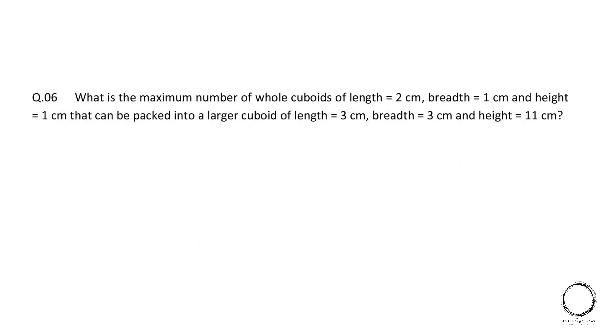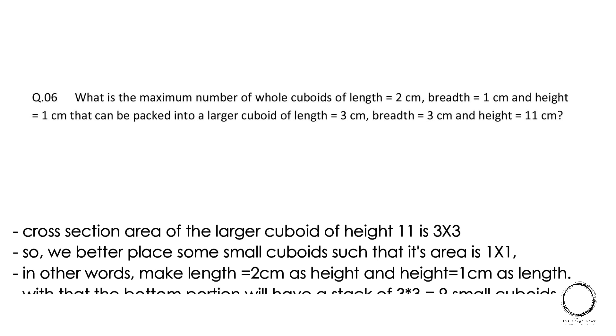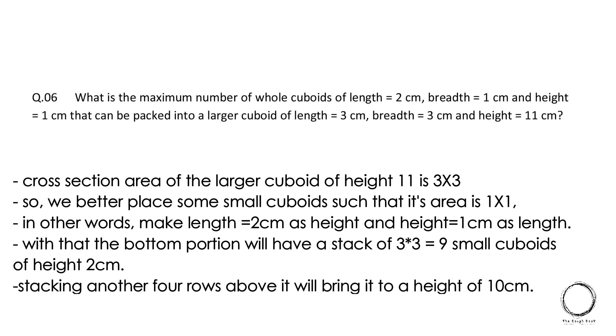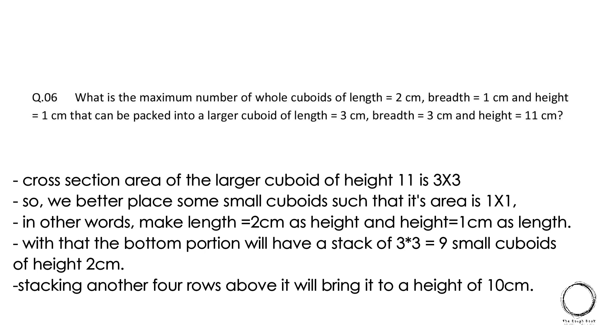Moving on. What is the maximum number of whole cuboids of length 2 cm, breadth 1 cm, and height 1 cm that can be packed into a large cuboid of length 3 cm, breadth 3 cm, and height 11 cm? Cross-section area of the large cuboid of height 11 is 3 x 3. So we better place some small cuboids such that its area is 1 x 1. In other words, make length equal to 2 cm as height and height, that is 1 cm, as length.